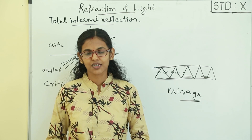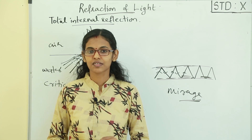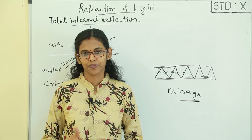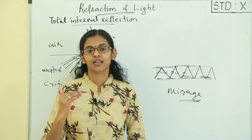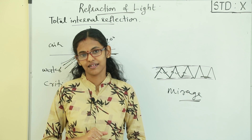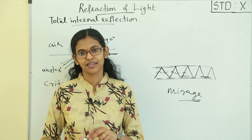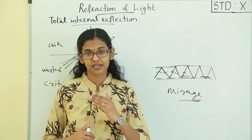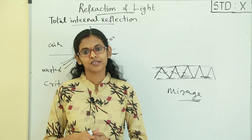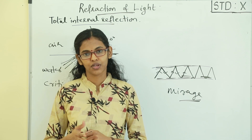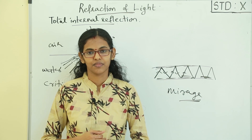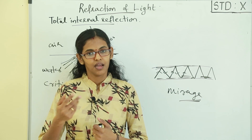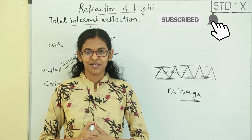The critical angle is when a ray of light passes from a denser medium to a rarer medium, the angle of incidence at which the angle of refraction is 90 degrees is known as the critical angle. Total Internal Reflection occurs when the angle of incidence is greater than the critical angle and the ray is reflected back to the same medium. The conditions are: ray passes from denser to rarer medium, and angle of incidence is greater than the critical angle. Critical angle of water is 48.6 degrees and glass is 42 degrees. Applications include the medical field, telecommunication field, brilliance of diamonds, and mirage. Thank you!